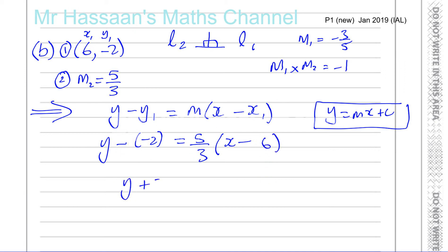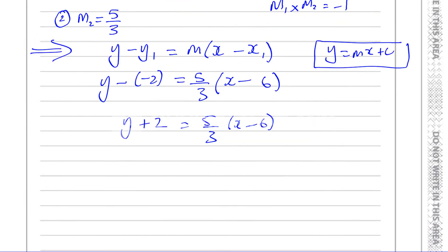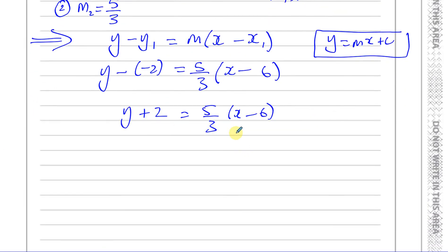So this will give you y plus 2 equals 5 over 3 times (x minus 6). Now what I'm going to do is multiply both sides by 3 to get rid of this fraction. So on this side I'm going to get 3y plus 6. Don't forget to multiply 3 by the whole of this side.